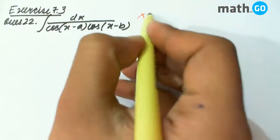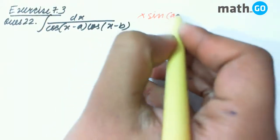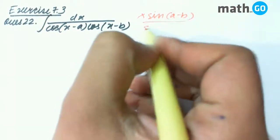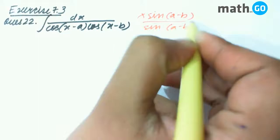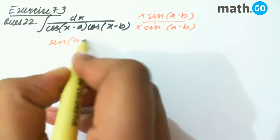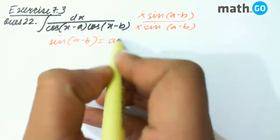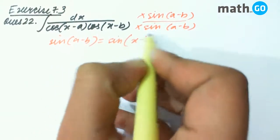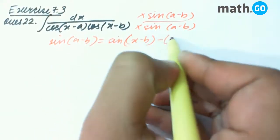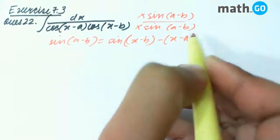We multiply the numerator and denominator by sin(a-b), with the aim to write sin(a-b) as sin(x-b) minus sin(x-a).